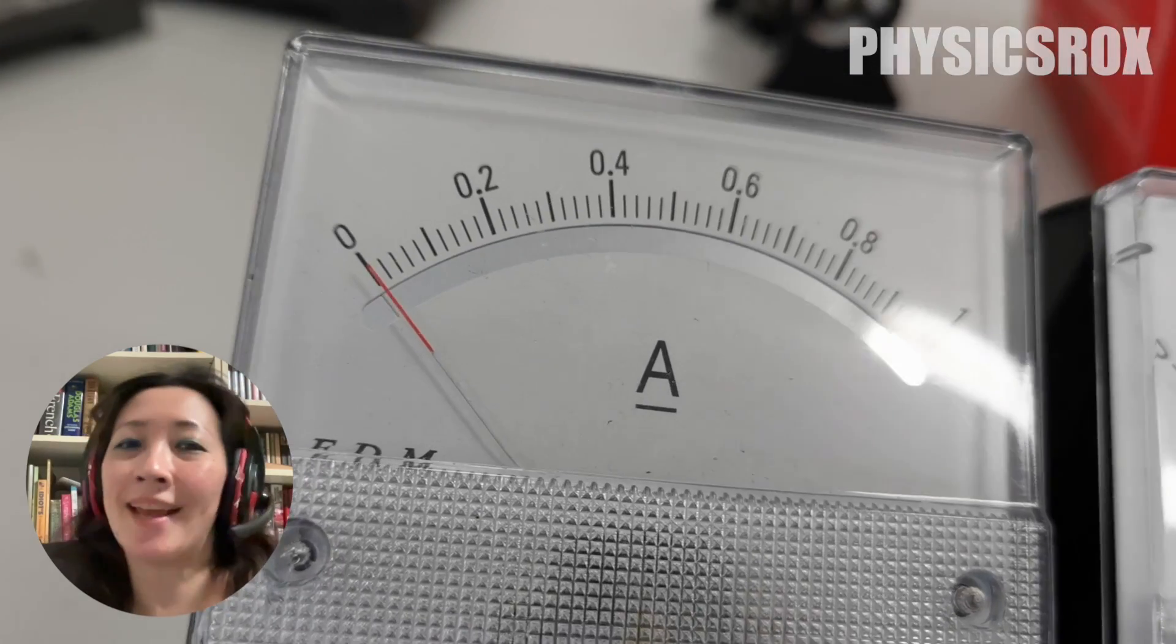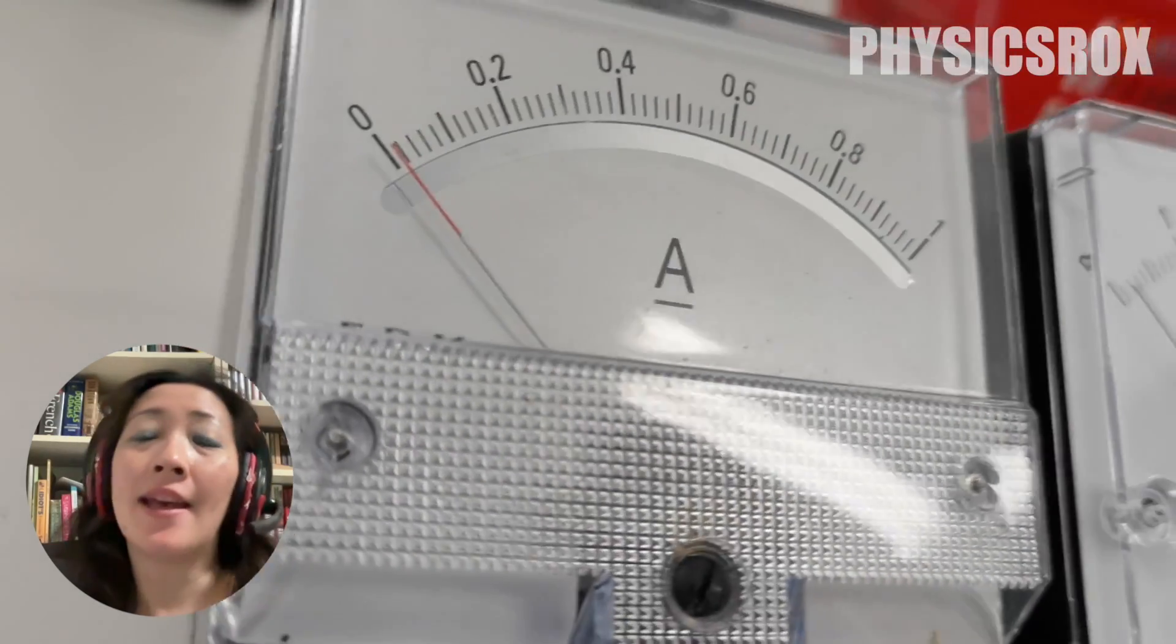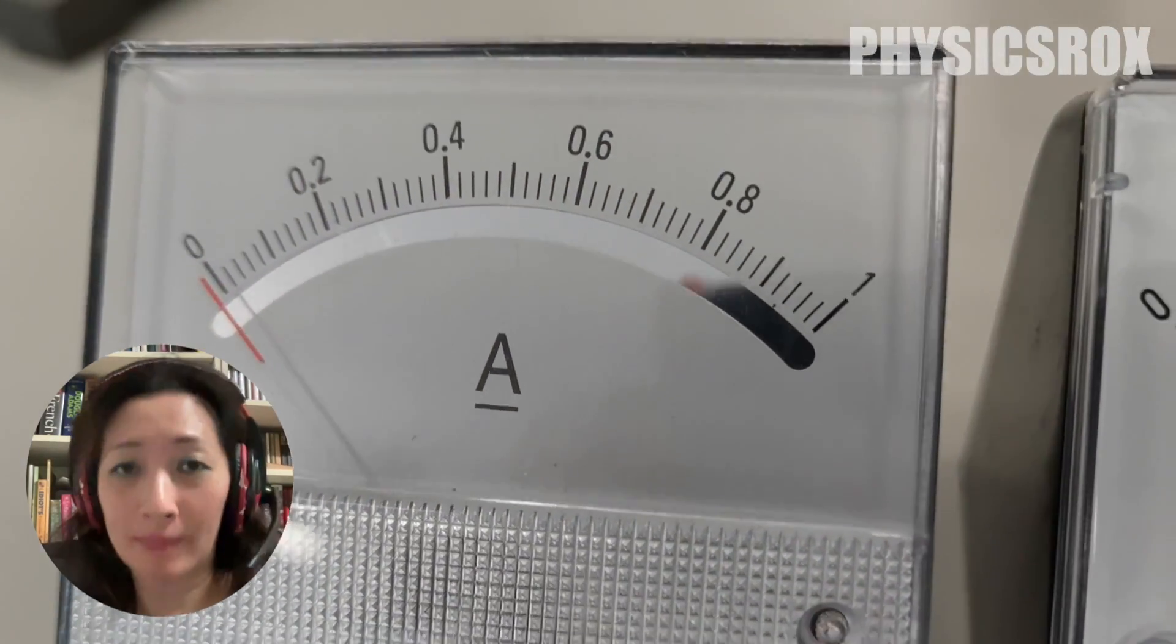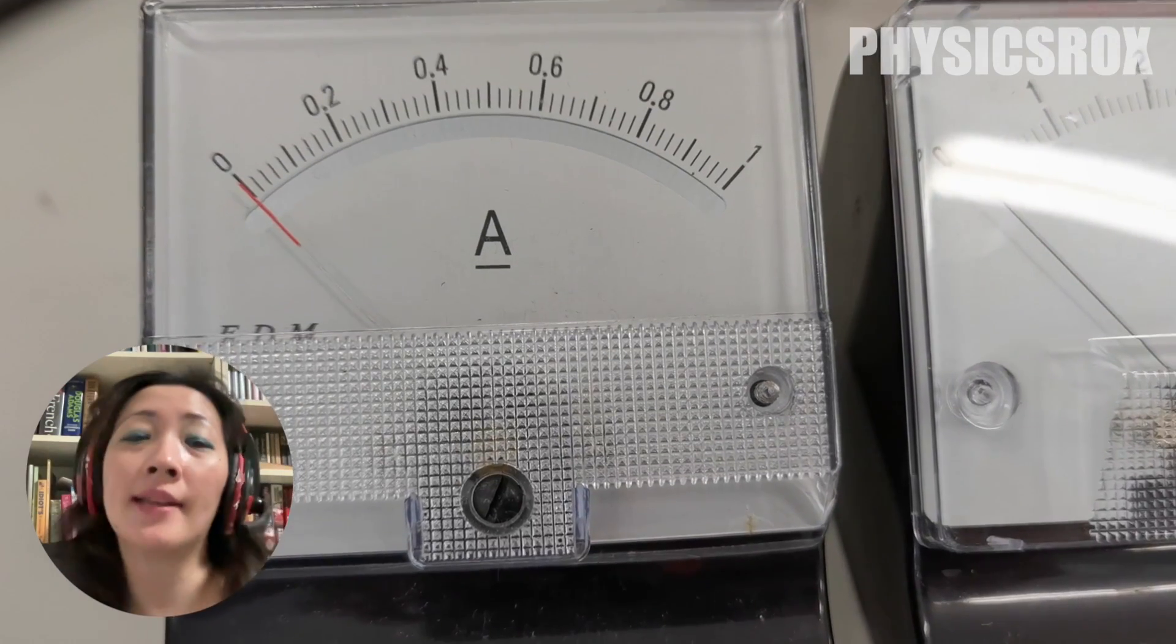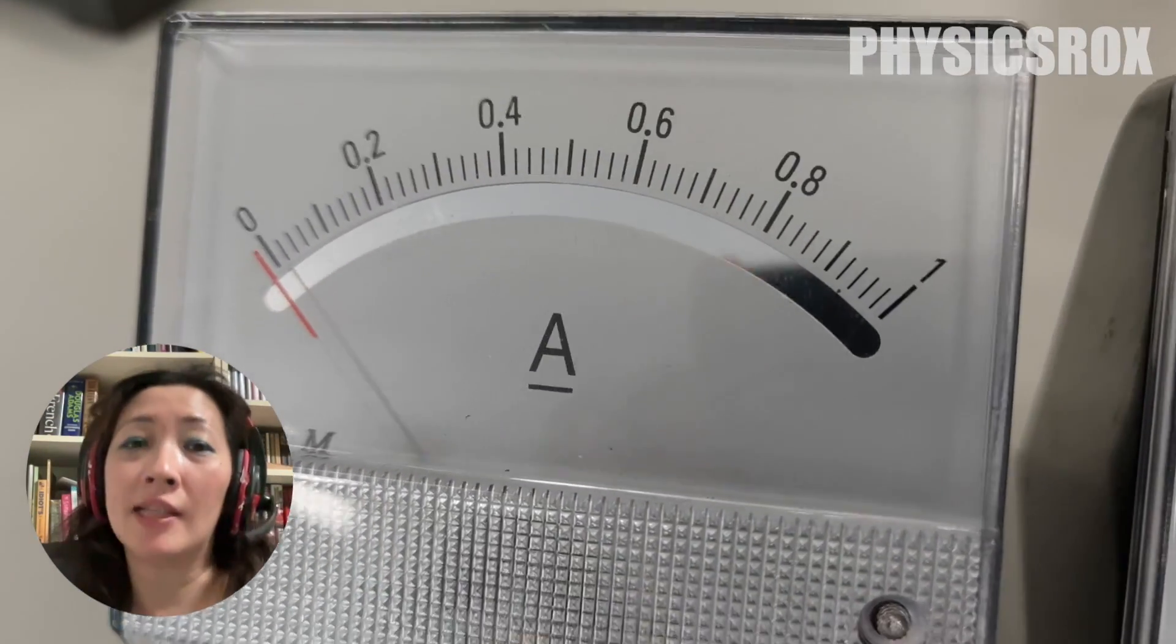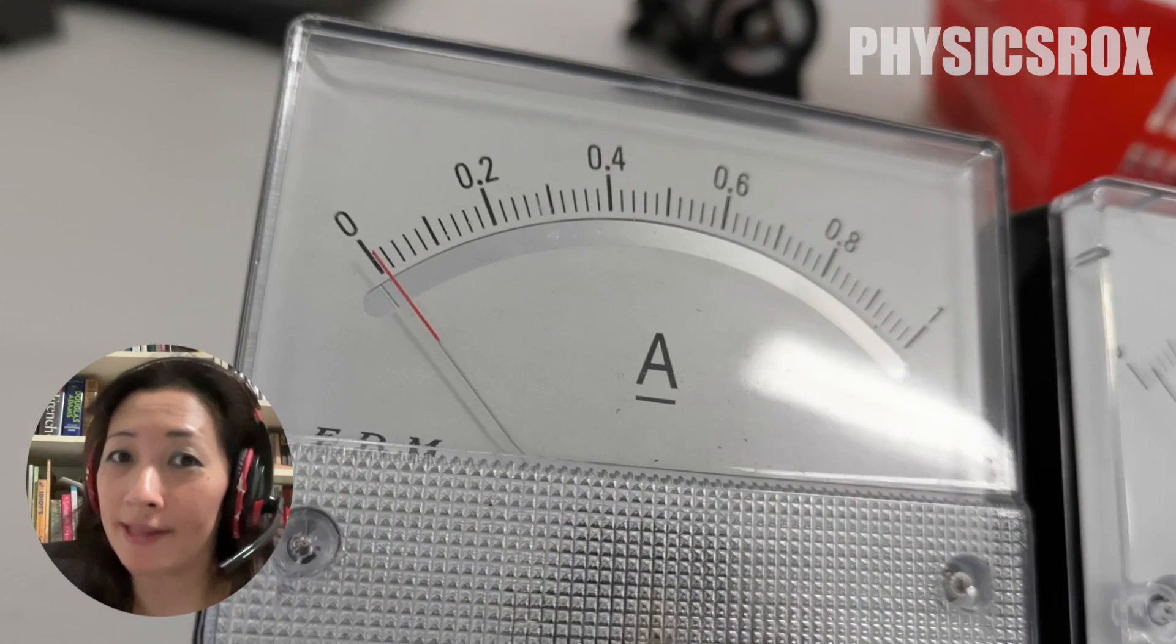So what is an anti-parallax mirror? An anti-parallax mirror will help us avoid parallax errors when we're taking readings with the ammeter. So how do we use this?